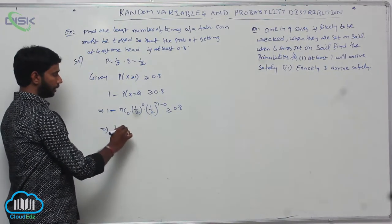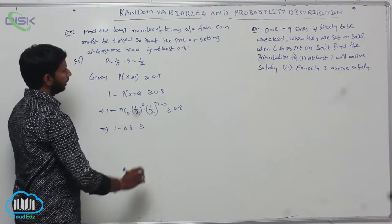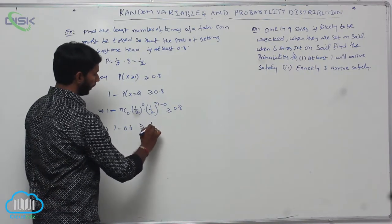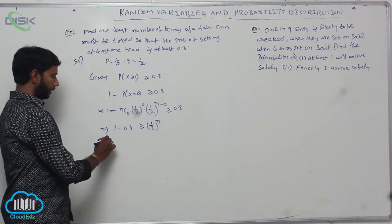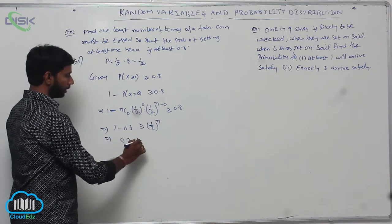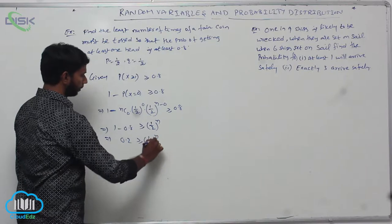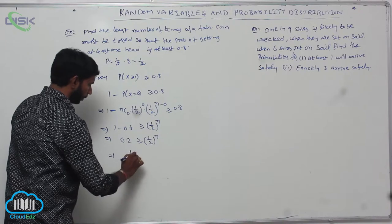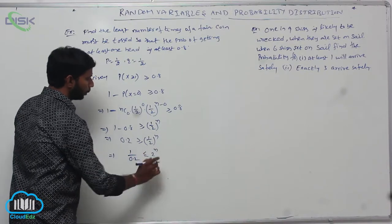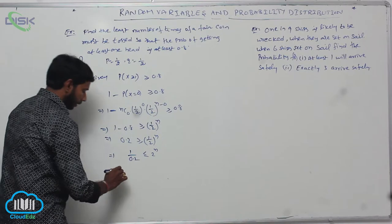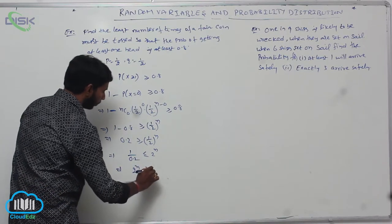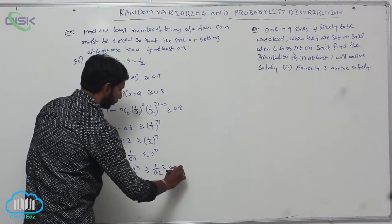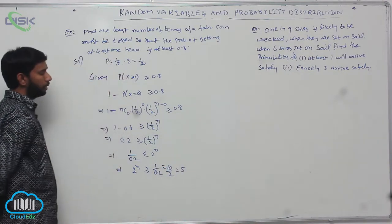So 1 minus (1/2)^N is greater than or equal to 0.8, which means (1/2)^N is less than or equal to 0.2. Taking reciprocals, 2^N is greater than or equal to 1 by 0.2, which equals 10 by 2, that is equal to 5.